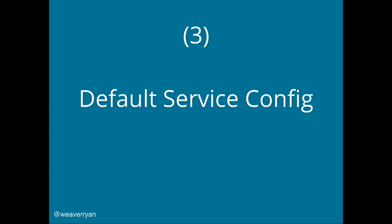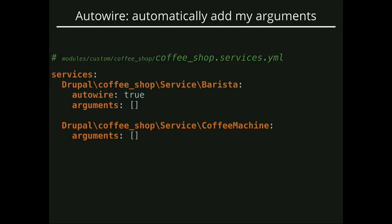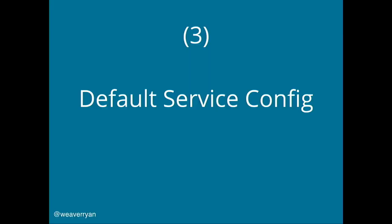The next thing we can do is apply some default service configuration. We probably want auto-wire under all of our services, so that way if we add a constructor argument, type-hint it, and keep working without needing to go back to the services file. By the way, auto-wiring only fills in your missing arguments — so if you already specified all the constructor arguments, auto-wire just shrugs and skips it. It's actually safe to have auto-wire on all the time; it's only going to try to fill in the stuff that's missing.